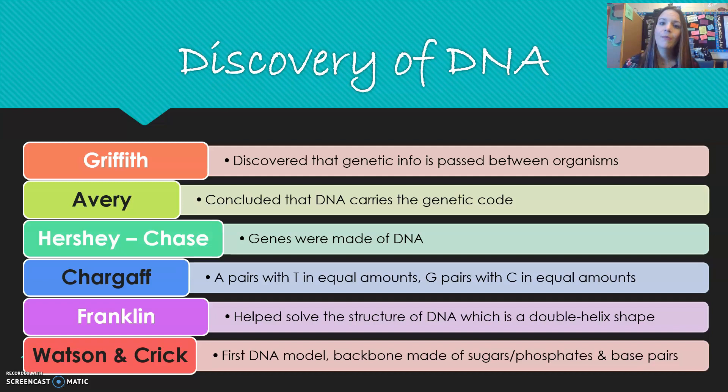Because A and T pair together, if there's 40% A, there has to be 40% T. The same is true with G and C — they always occur in equal amounts. Franklin was really important because she was known for a well-known X-ray image that actually showed the structure of DNA.